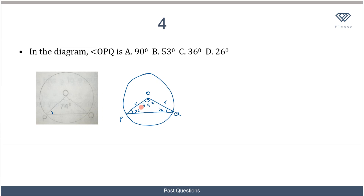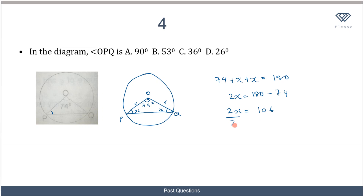We know the sum of angles in a triangle is 180 degrees, so we can write: 74 plus x plus x equals 180. That gives 2x equals 180 minus 74, so 2x equals 106. Dividing both sides by 2, x equals 53 degrees. So angle OPQ is 53 degrees, and the correct option is option B.